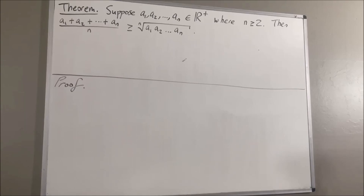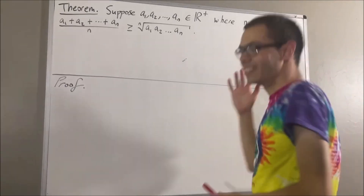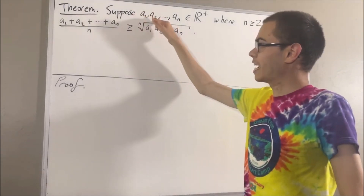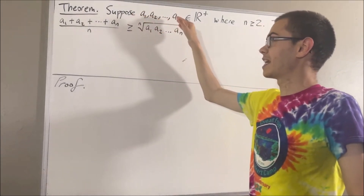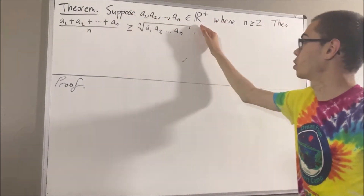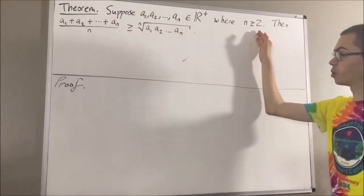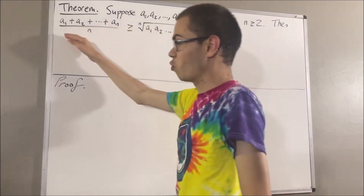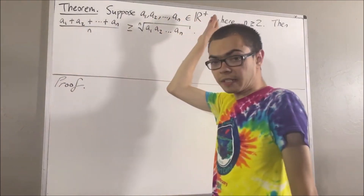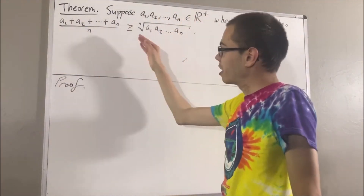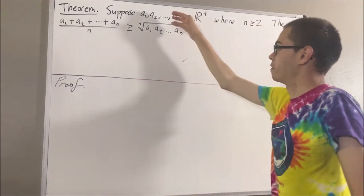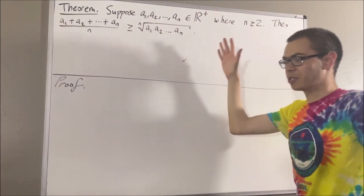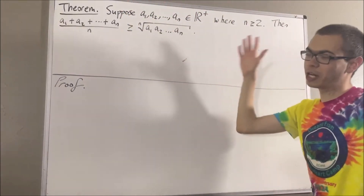Hello! In this video, we are going to prove the following theorem. Suppose a1, a2, dot dot dot, an is a list of positive real numbers where n is greater than or equal to 2. Then, the arithmetic mean of this list is greater than or equal to the geometric mean of this list. Now, in proving this theorem, we are going to use the following preliminary result.